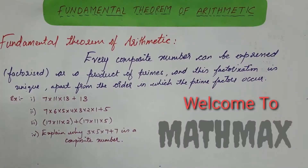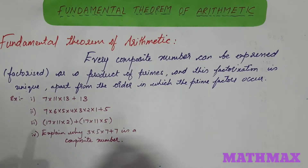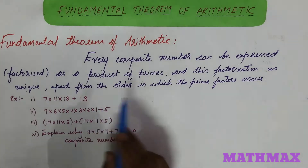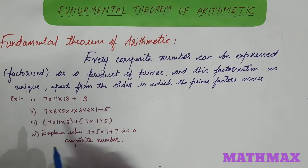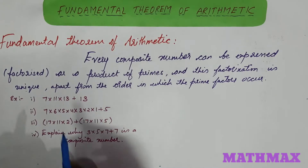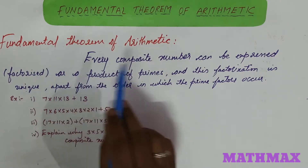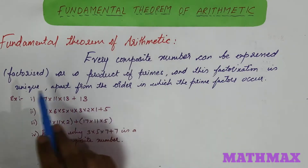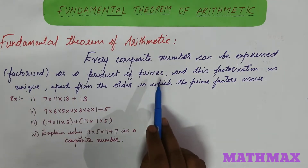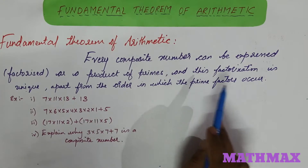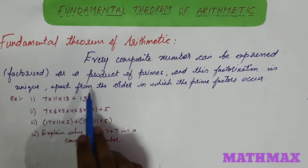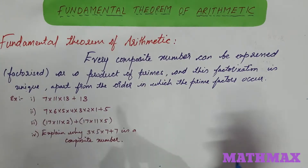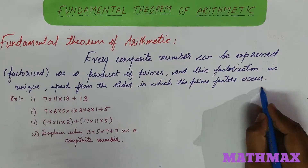Hello everyone, welcome to MathMax. This video is about the Fundamental Theorem of Arithmetic. A composite number can be expressed as a product of prime numbers. The Fundamental Theorem of Arithmetic states that every composite number can be factorized as a product of primes, and this factorization is unique apart from the order in which the prime factors occur.